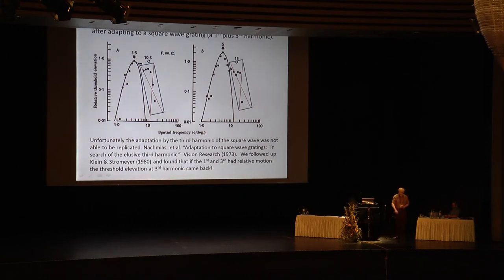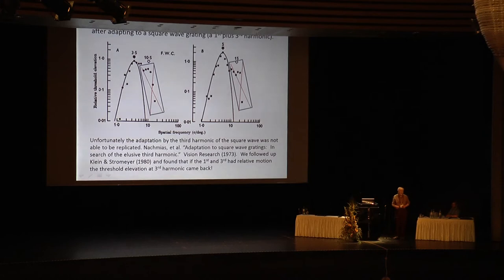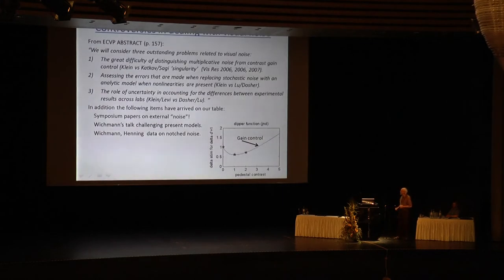Michael Morgan pointed out two days ago that even when using signal detection theory, if you're not very careful, you can get criterion effects even in signal detection theory that is misused.